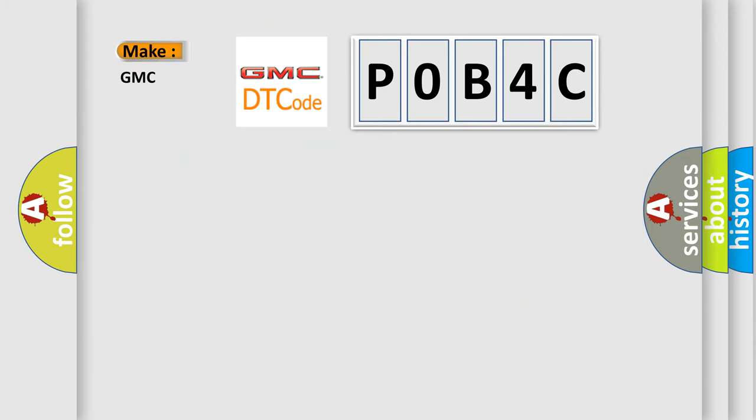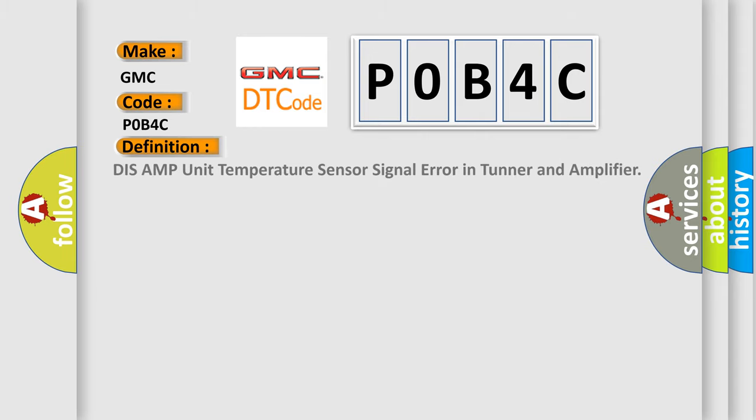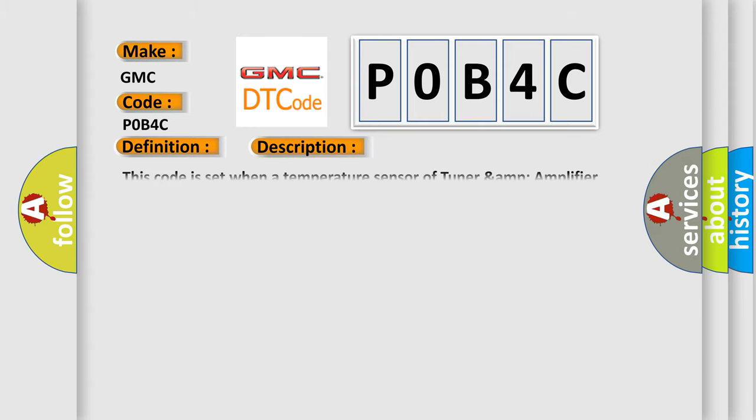So what does the diagnostic trouble code P0B4C interpret specifically for GMC car manufacturers? The basic definition is: DIS AMP unit temperature sensor signal error in tuner and amplifier. This code is set when a temperature sensor of tuner amp amplifier detects that the temperature is over 85 degrees Celsius.